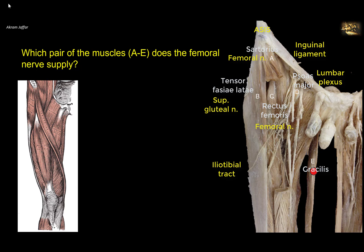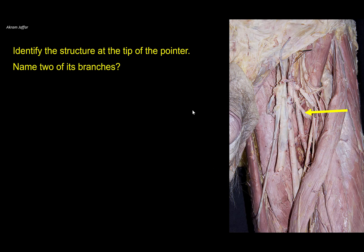So the femoral nerve supplies this pair of muscles: sartorius and the rectus femoris.